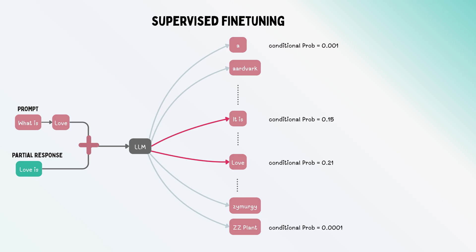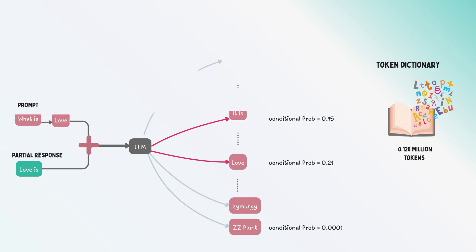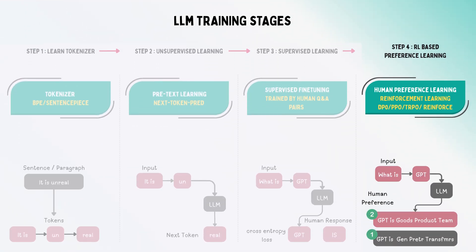If the dictionary has 120,000 tokens, your output size is 210,000 classes. With a large number of tokens, it's hard to train—but with billions of GPUs, you can do anything. The last step is preference learning.